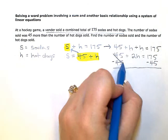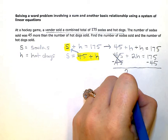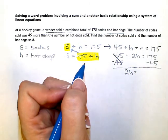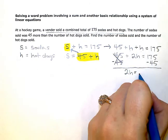And after I simplify, I'm left with 2H equals 175 minus 45 is 130.